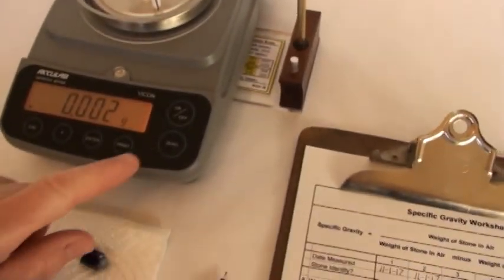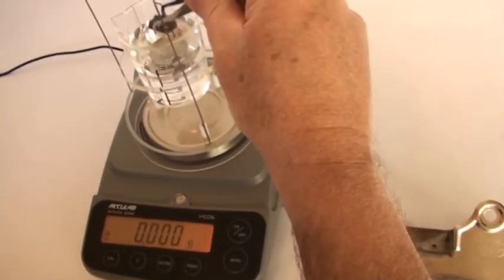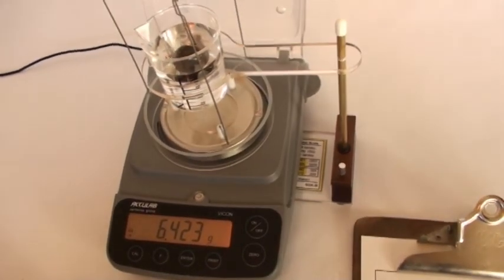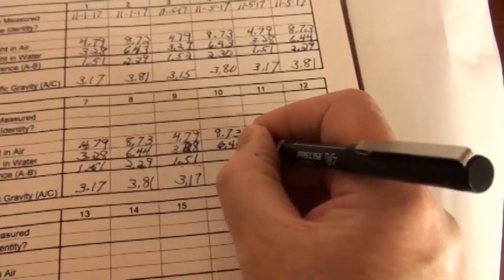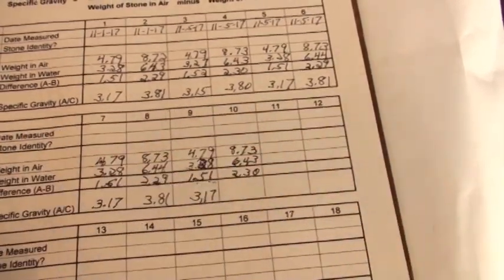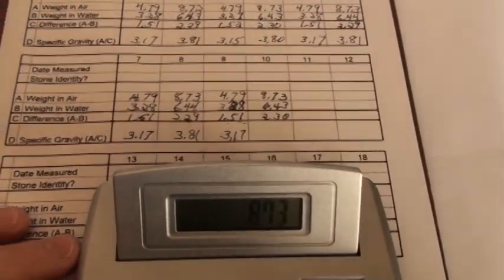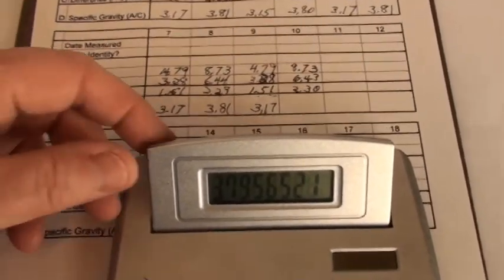Now for the weight in water. We extract it. Tare the scale again in case there's any drift. Weight in water. Looks good. And that value is 6.43 grams. Weight in water. Our difference being 2.30 grams. Now for our final division step: 8.73 divided by that difference of 2.3 gives us an SG of 3.80.